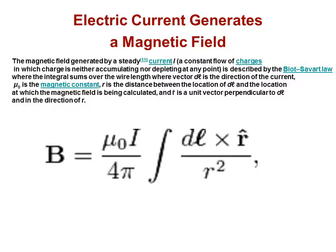Mu zero is the magnetic constant. R is the distance between the location of DL and the location at which the magnetic field is being calculated, and R hat is a unit vector perpendicular to DL and in the direction of R.